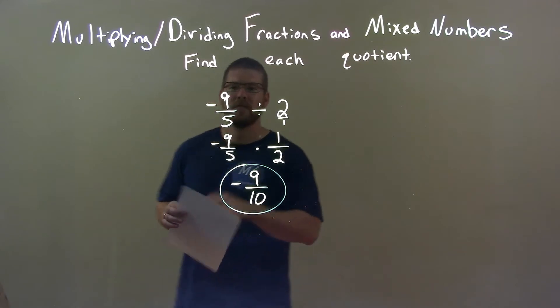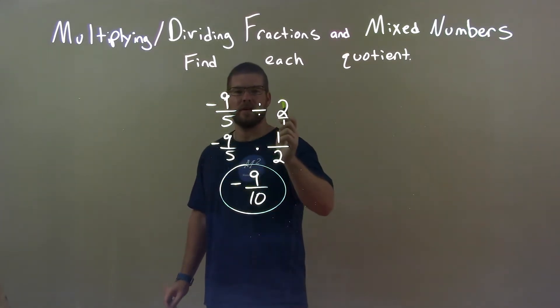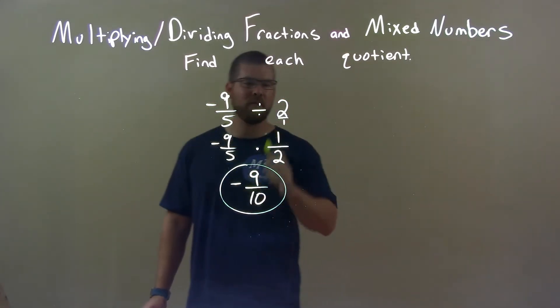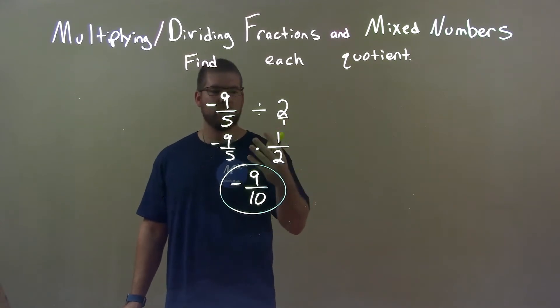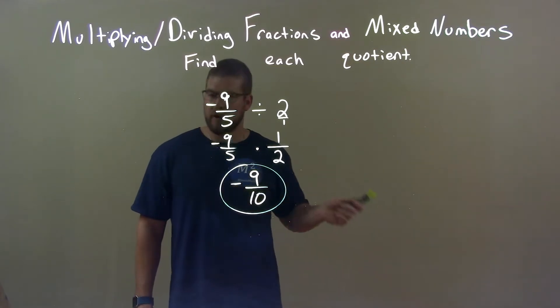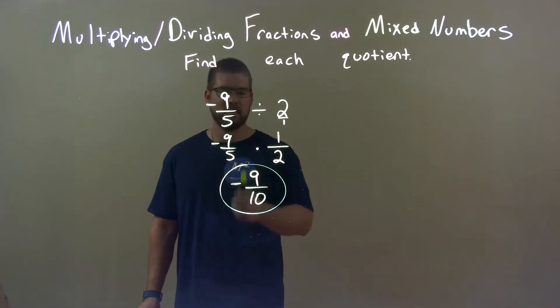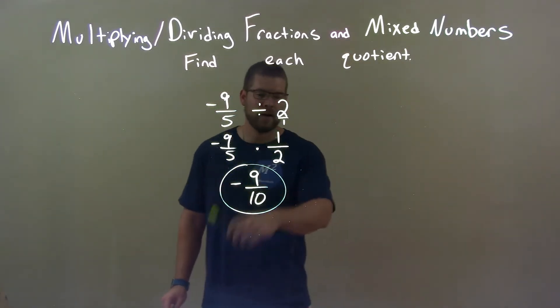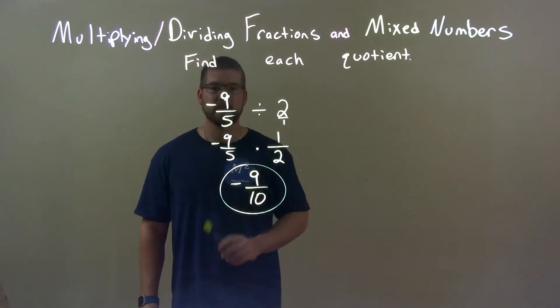Quick recap. We're given negative 9 fifths divided by 2. Well, divided by 2, I don't like. Same thing as multiplying by 1 half. Change that. Then multiply across the numerator, multiply across the denominator. Negative times a positive is a negative. So, final answer: negative 9 over 10. That's right.